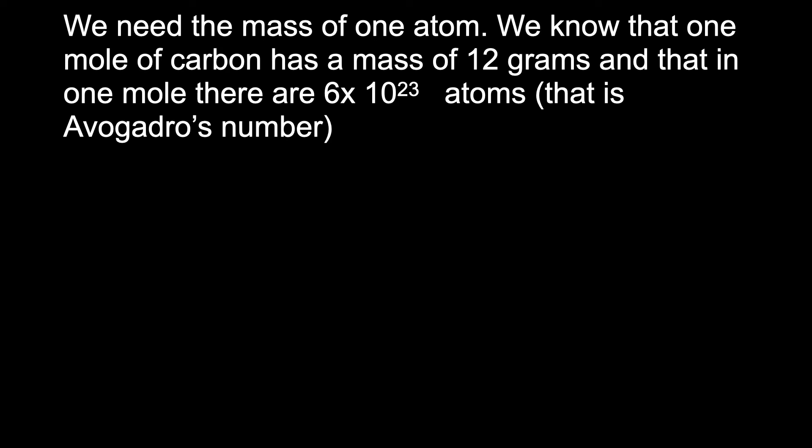We could take the easy way and look that up, but we can work it out from first principles. We know that a mole of carbon has a mass of 12 grams, and in that one mole, there are 6 × 10²³ atoms. That's Avogadro's number.